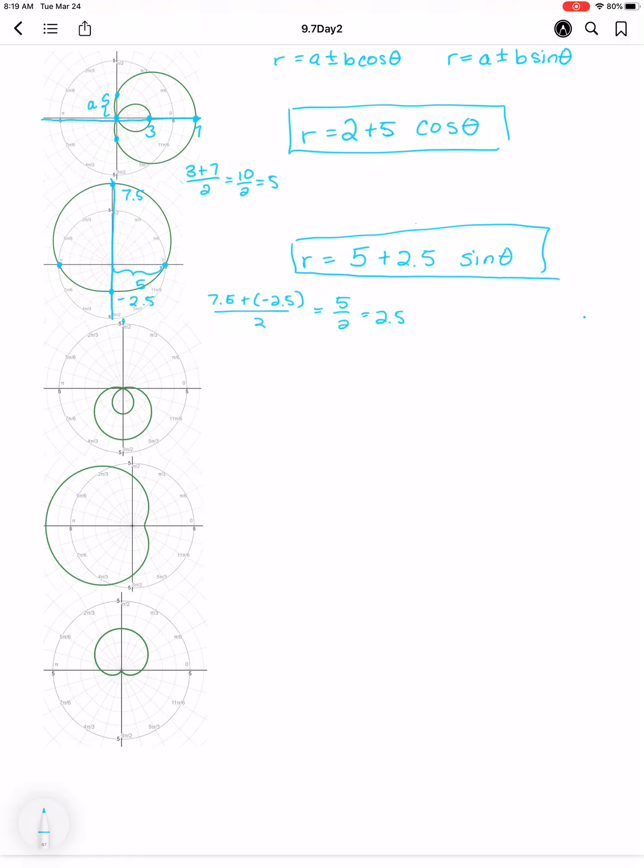All right, here we're symmetric about theta equals pi over 2 again. So I know it's a sine function. We intersect the other axis one unit away, so our A value is 1. We've got a point at negative 2, a point at negative 4. Negative 2 plus negative 4 over 2 is negative 6 over 2, or negative 3. So our B value will be negative 3. Equation done.